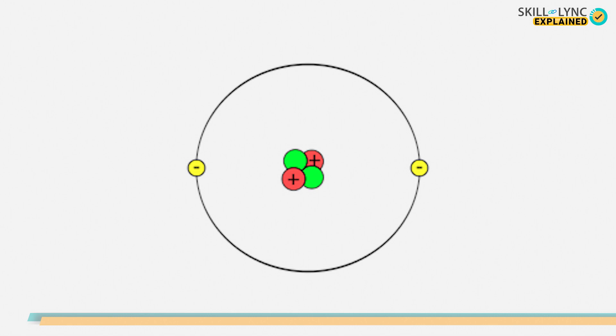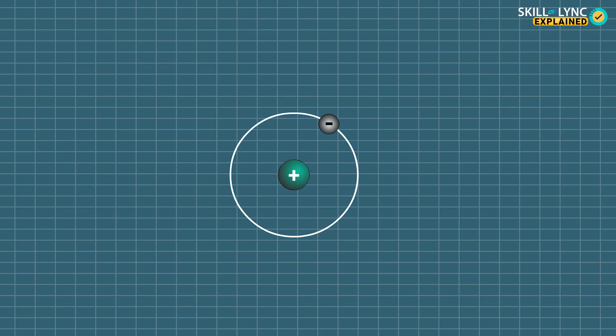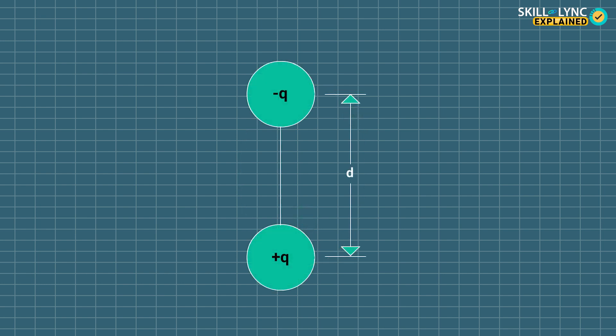In most cases, the center of the positive charges and the center of the negative charges coincide with each other, whereas in some materials they are separated by a small distance. When two equal and opposite electric charges are separated by a small distance, then it is said to form an electric dipole.